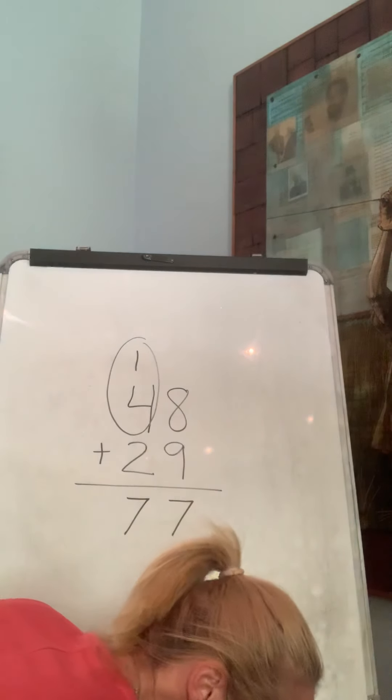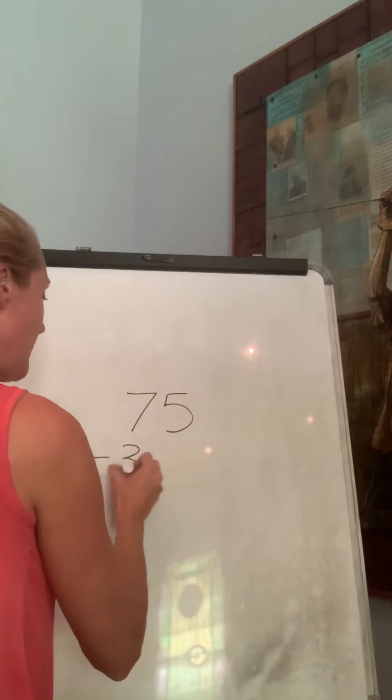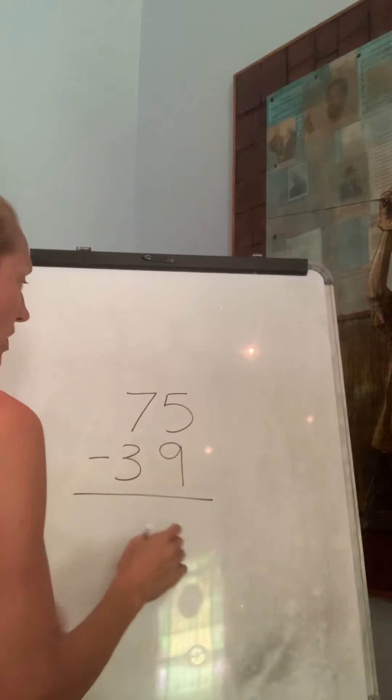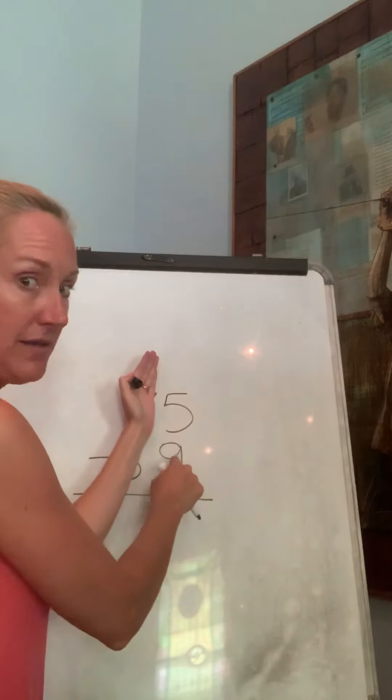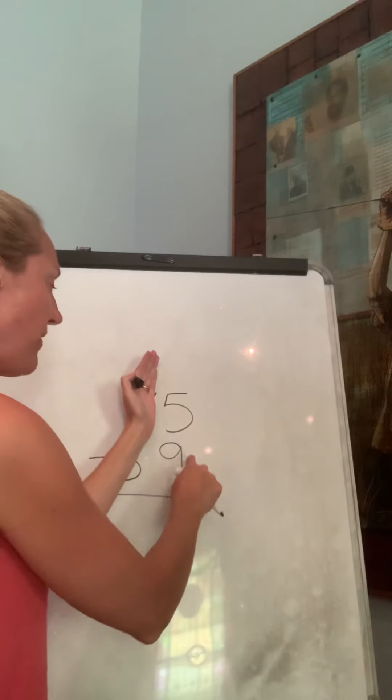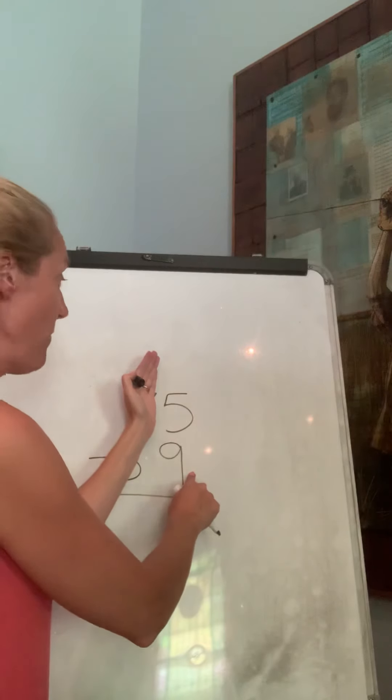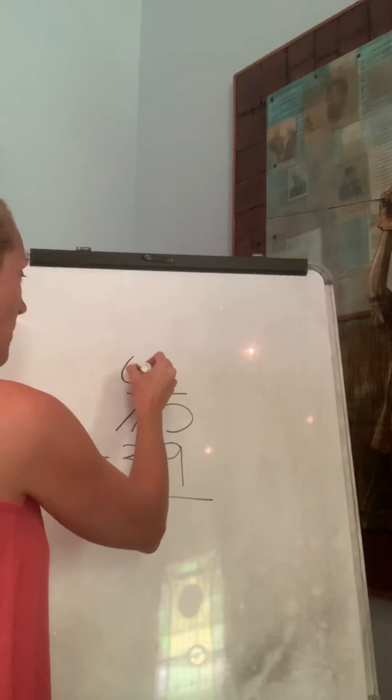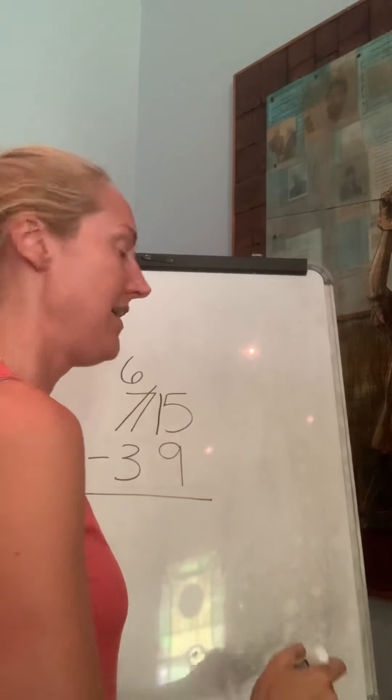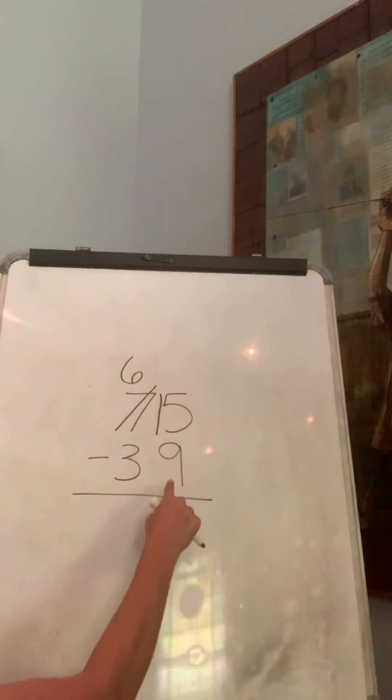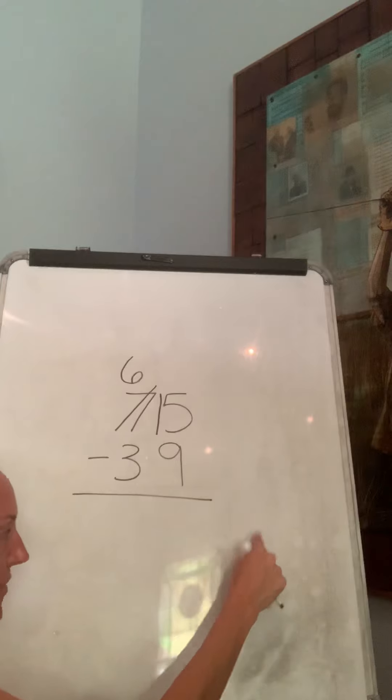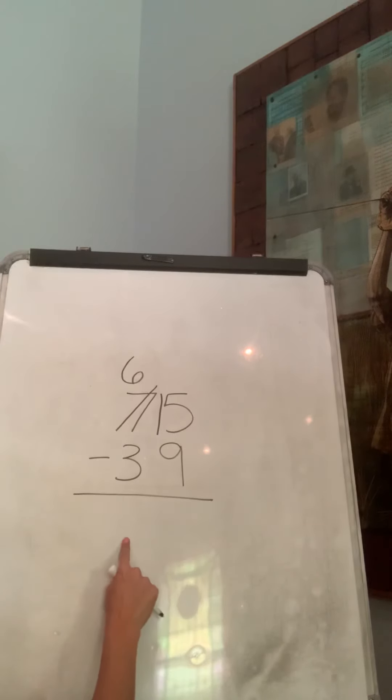Our next one is 75 minus 39. 75 minus 39. I always start with, remember we're doing subtraction, I start with the ones and I ask myself the question, is 5 greater than 9? Nope, so I need to make it bigger. The 7 will go down 1 to a 6, and I'm going to put it over here. What is 15 minus 9? Again, if you need to get out your ruler, start at 15 and count back 9 hops. 15 minus 9 is 6. 6 minus 3 is 3. So we have 3 tens and 6 ones, 36.